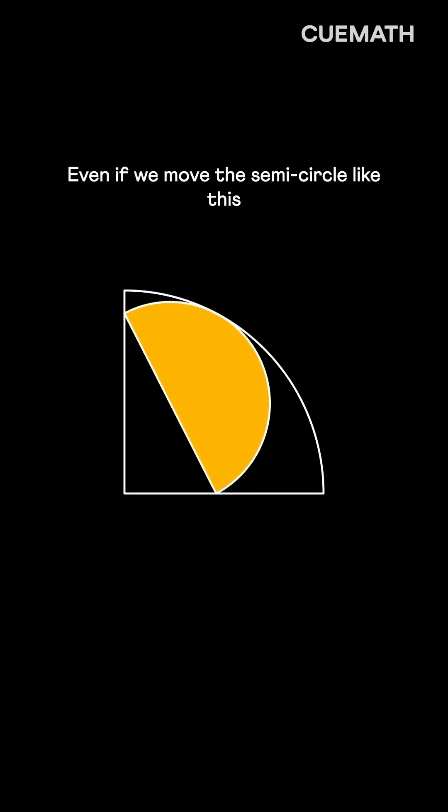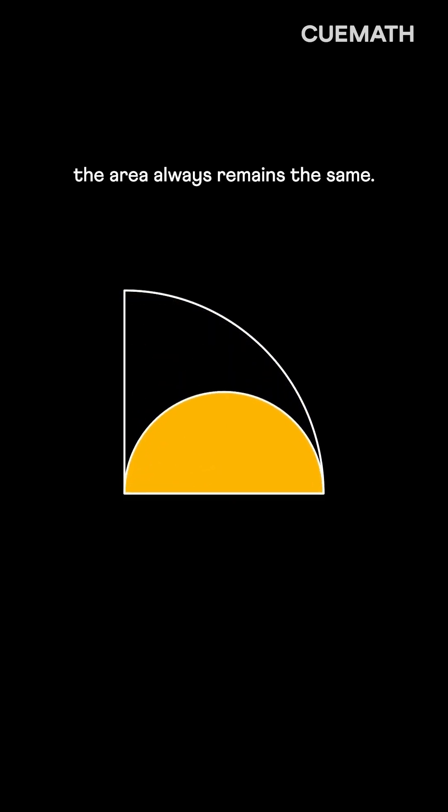Even if we move the semicircle like this within the quadrant, the area always remains the same.